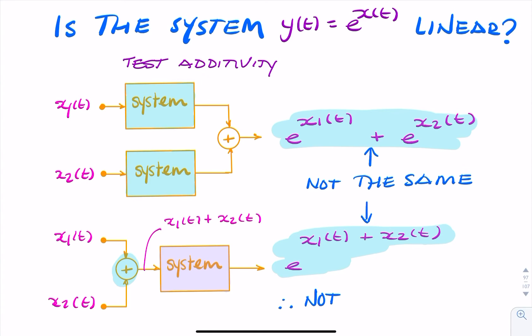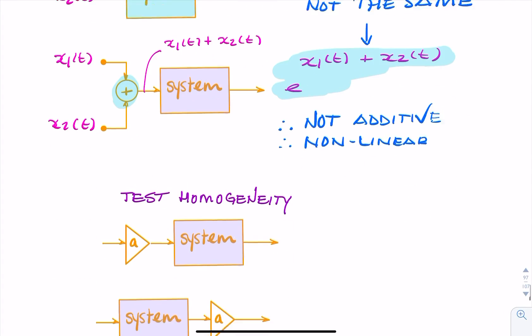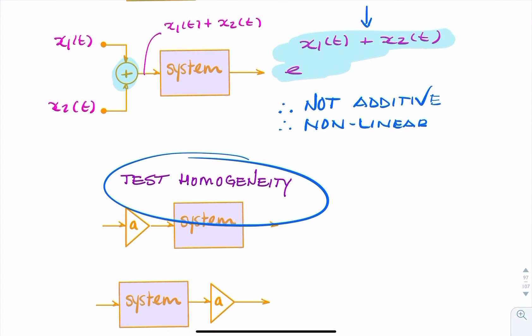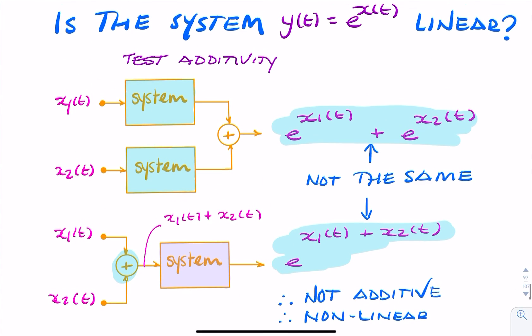Therefore, non-linear. We don't need to carry on and do the test for homogeneity because it's failed the test for additivity.